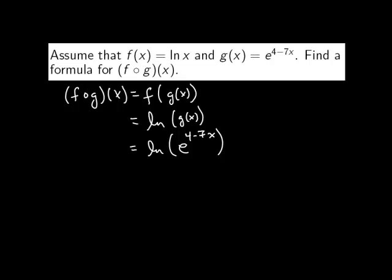And g(x) is e to the 4 minus 7x. So now you can think about this as a composition of inverse functions which use the identity function, so that just pops down the 4 minus 7x. Or you can use the property of logarithms that brings the exponent to the front. So that equals 4 minus 7x times the ln of e.